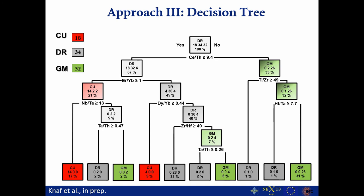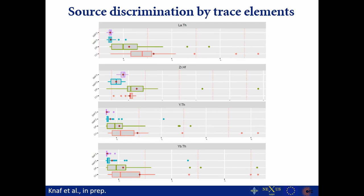In the multi-class regression approach, instead of a single trace element ratio at each split, we use multiple trace element ratios simultaneously, which makes the analytical error negligible. Compared to the decision tree, this is elegant but requires data normalization given the high variability in values. We normalized each trace element ratio for each source so that the mean is set to zero and the standard deviation is set to one.